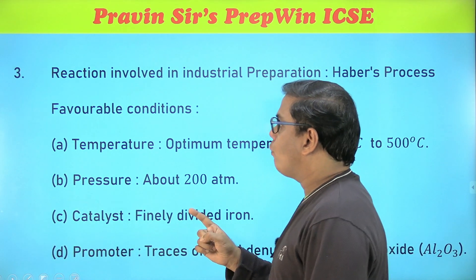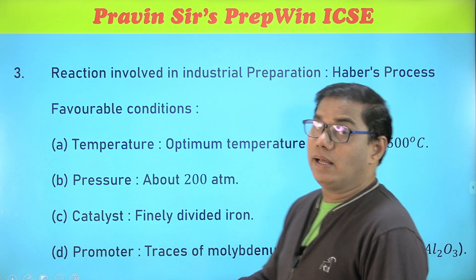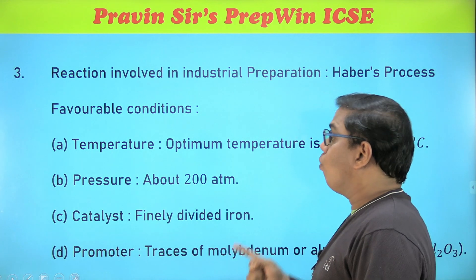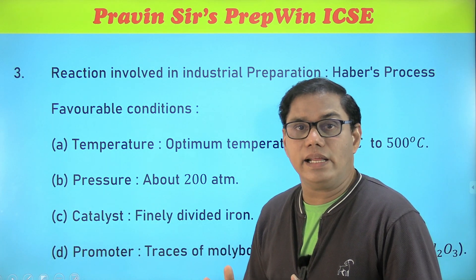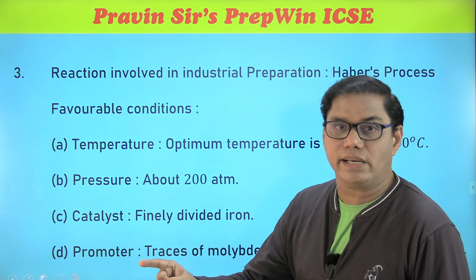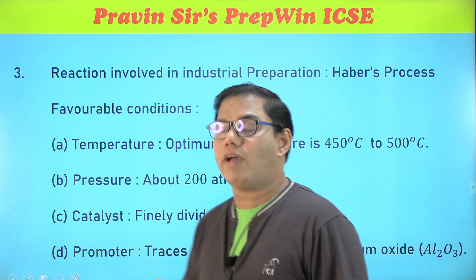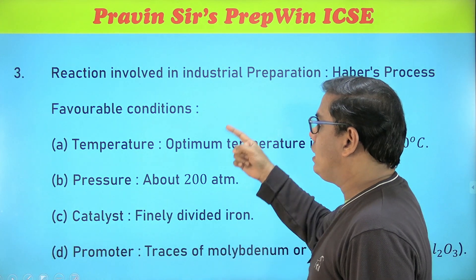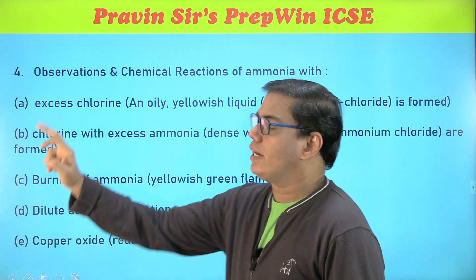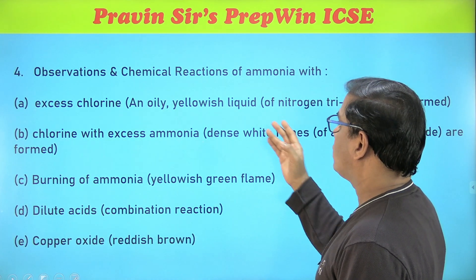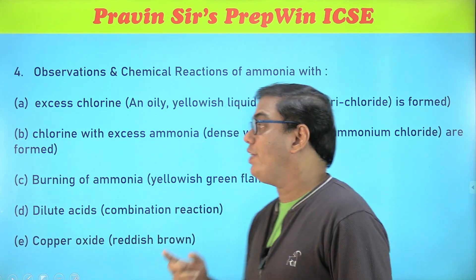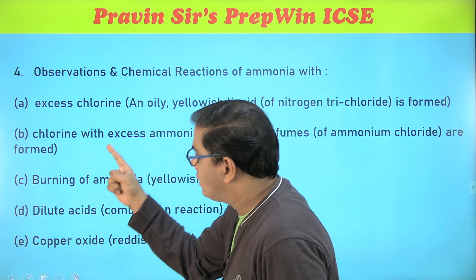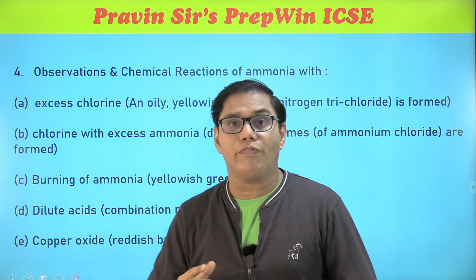Along with Haber's process, you need to know: what is the optimum temperature for that reaction, what pressure is required, and which catalyst and promoter are used. This question is very very important — please make sure you do not enter the examination hall without knowing the answers. Finally, observations and chemical reactions of ammonia: what happens when ammonia reacts with chlorine gas — when chlorine is in excess and when ammonia is in excess, both the reaction and the product are different.